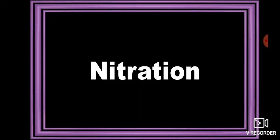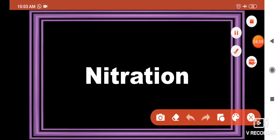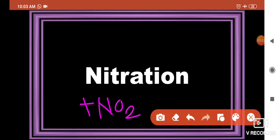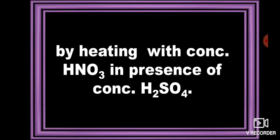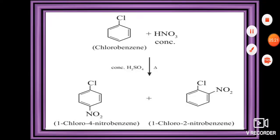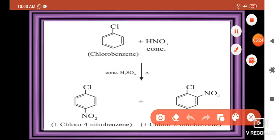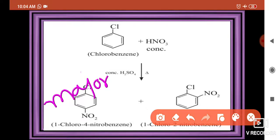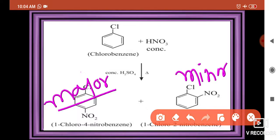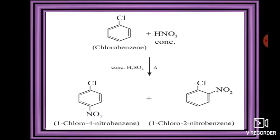The next reaction is nitration. Nitration is the addition of a NO2 group. When a haloarene is heated with concentrated HNO3 in the presence of concentrated H2SO4, this reaction is called a nitration reaction. In this reaction, 4-nitrochlorobenzene is the major product and 2-nitrochlorobenzene is the minor product. The NO2 group is added at the ortho and para positions.